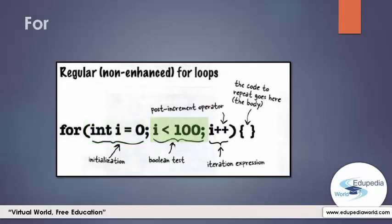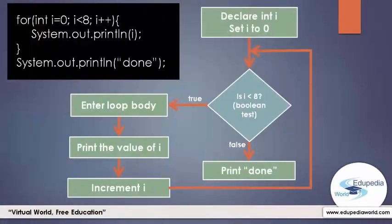The second part is the boolean test. This is where the conditional test is evaluated, like the condition in a while loop. Whatever is in here must resolve to a boolean value — true or false. This boolean test doesn't always need to use comparison operators; you can also invoke a method that returns a boolean value. The third part is the iteration expression — you can put one or more things you want to happen with each trip through the loop, but this happens at the end of each loop iteration.